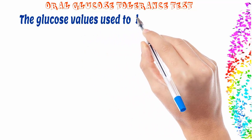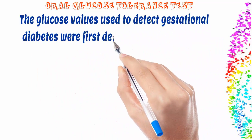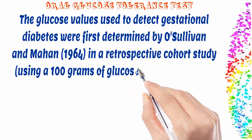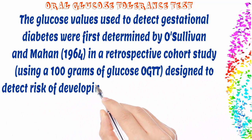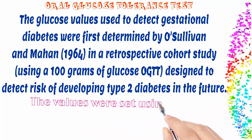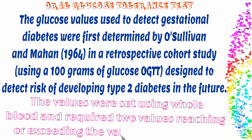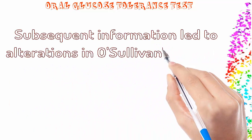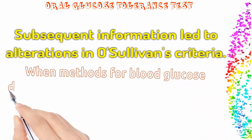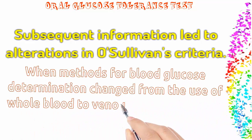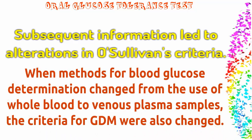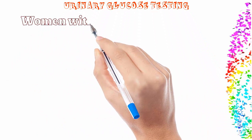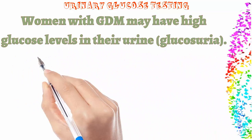The glucose values used to detect gestational diabetes were first determined by O'Sullivan and Mahan in 1964 in a retrospective cohort study using a 100-gram OGTT, designed to detect risk of developing type 2 diabetes in the future. The values were set using whole blood and required two values reaching or exceeding the threshold to be positive. Subsequent information led to alterations in O'Sullivan's criteria. When methods for blood glucose determination changed from the use of whole blood to venous plasma samples, the criteria for GDM were also changed.